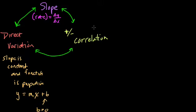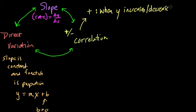A positive or negative correlation could occur in a direct variation. It could occur when there's any type of slope. A positive correlation is when y increases or decreases, x also does the same thing. In other words, if y is increasing, so is x. If y is decreasing, so is x.